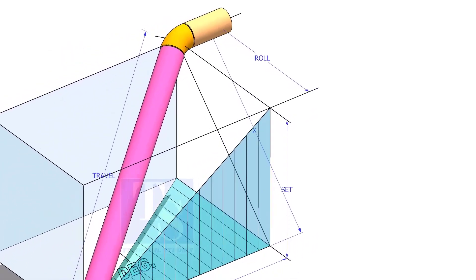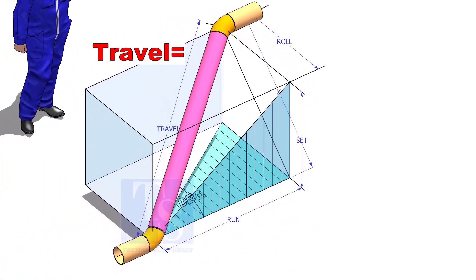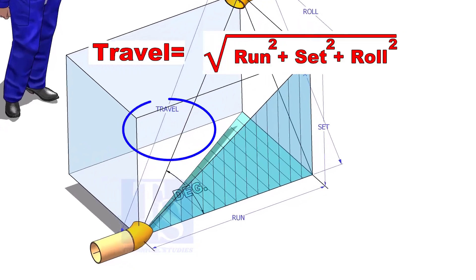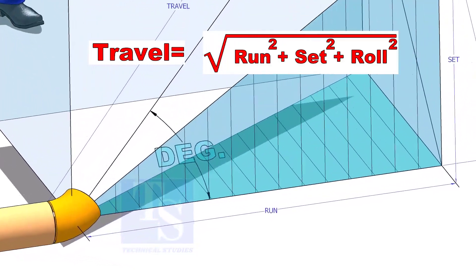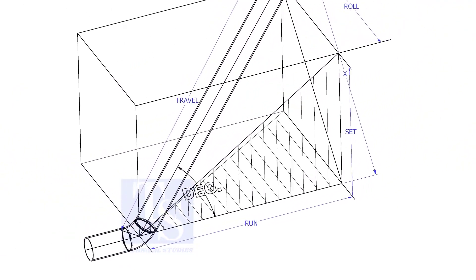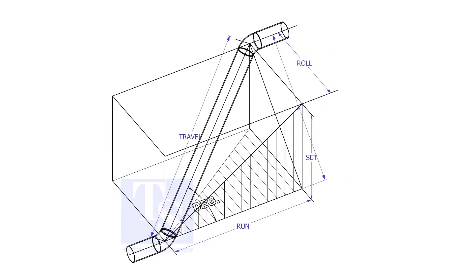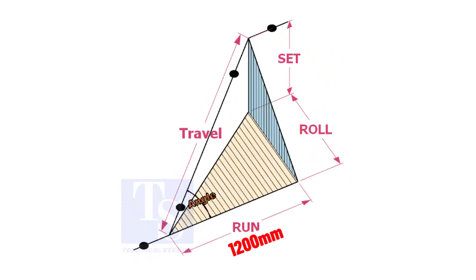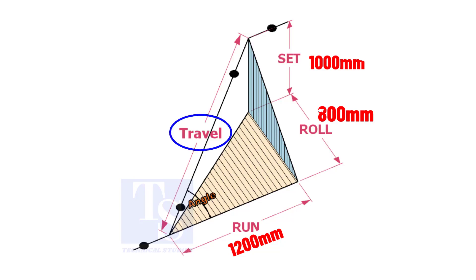The formula to calculate the travel length is the square root of the sum of the run, set, and roll. Assume that the run is 1200 mm, the set is 1000 mm, and the roll is 800 mm. Calculate the travel length.